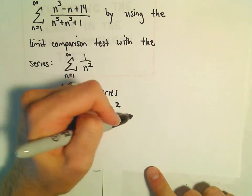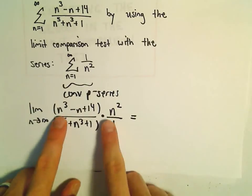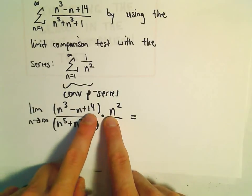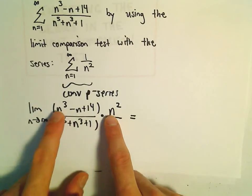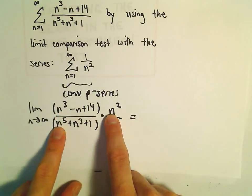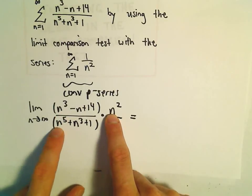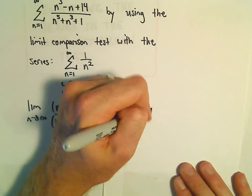Well, notice in the numerator, when we distribute, we're going to get an n to the 5th, and then the rest of it's going to be smaller degree. We'll have an n to the 5th over n to the 5th, since the degree of the numerator equals the degree of the denominator, the limit exists, and the coefficients would just be 1.